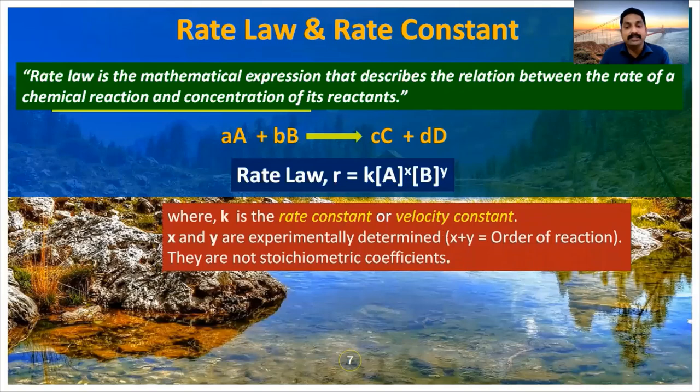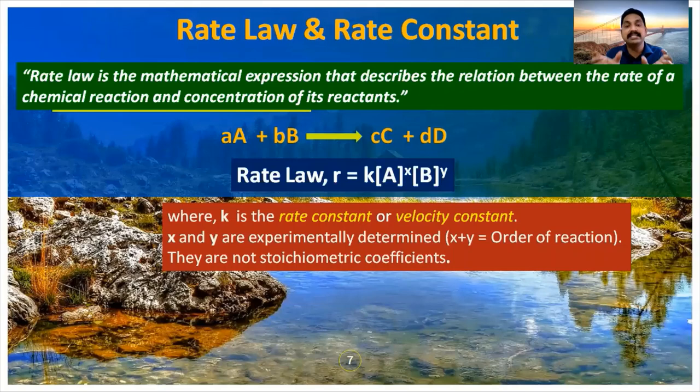Here k is the rate constant or velocity constant. x and y are experimentally determined quantities. Adding x and y gives the order of reaction. Importantly, x and y are not the stoichiometric coefficients written in the balanced equation.